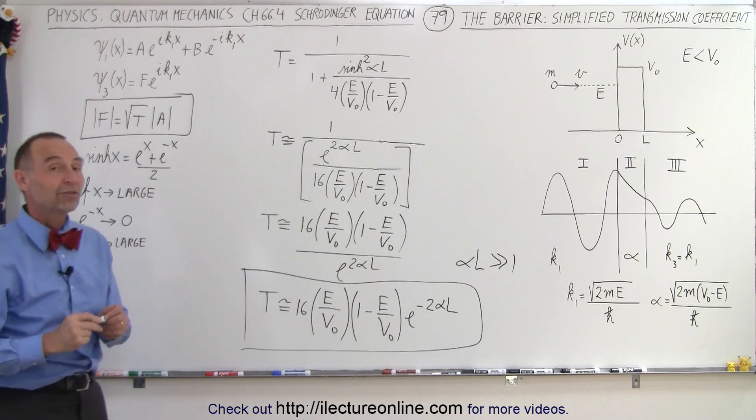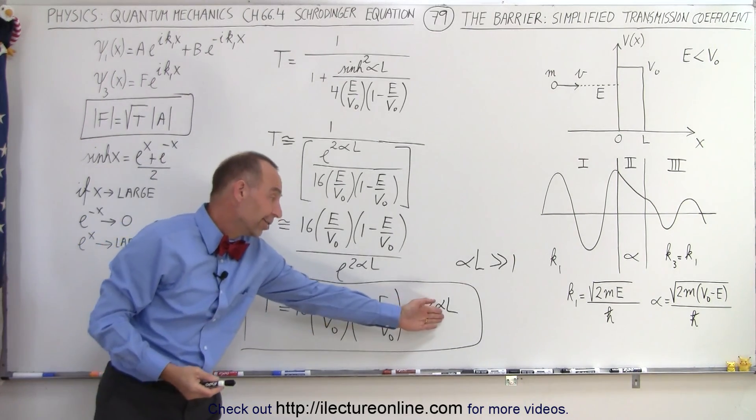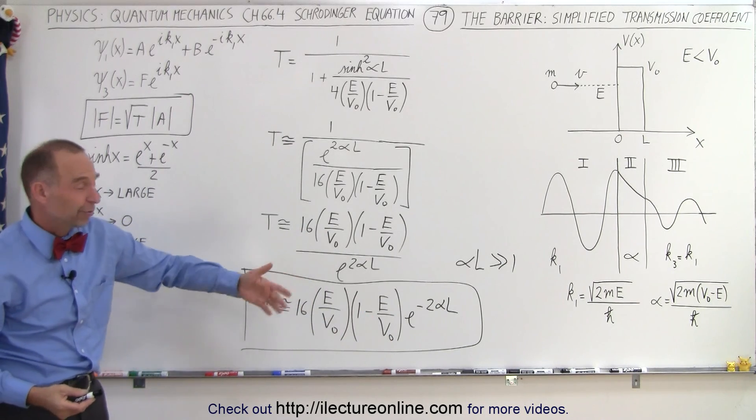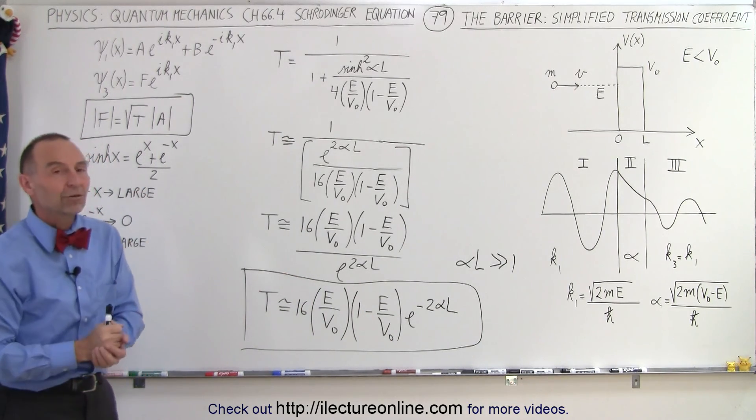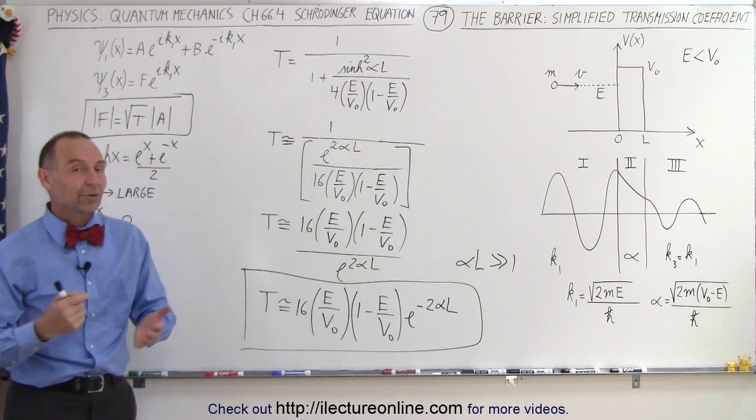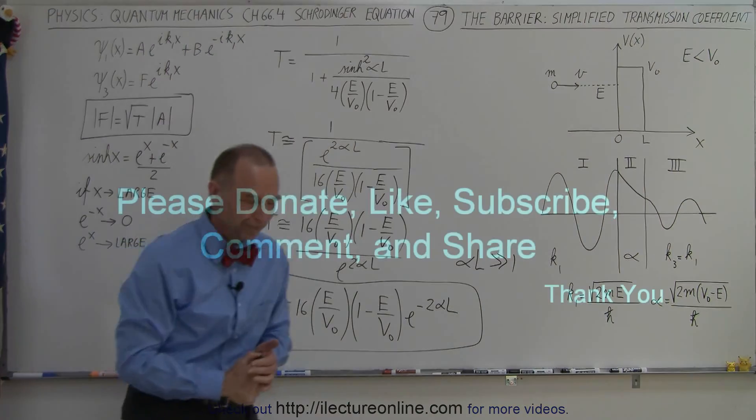So here's where our simplified equation came from, and we can use that if this value is at least 3 or 4 or 5, much larger than 1. That means that it's sufficiently decayed to the point where this is actually a pretty accurate approximation, and that's how it's done. Thank you.